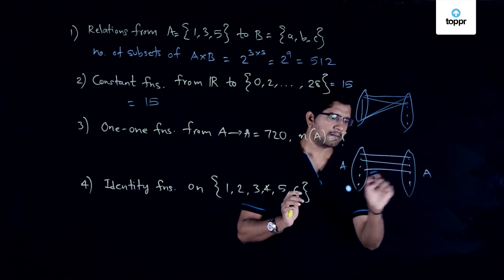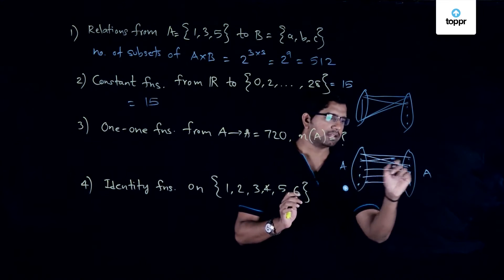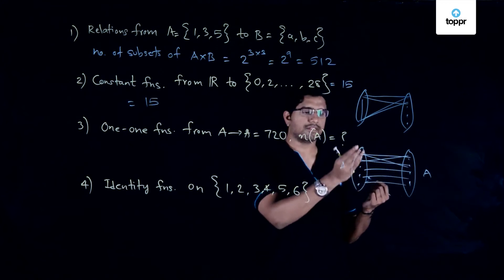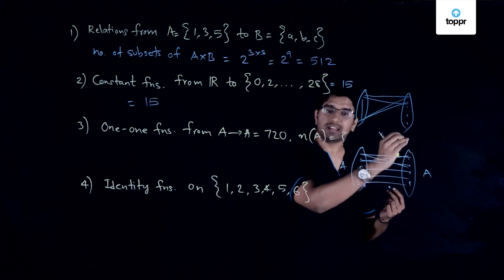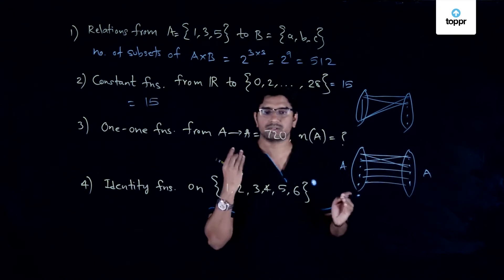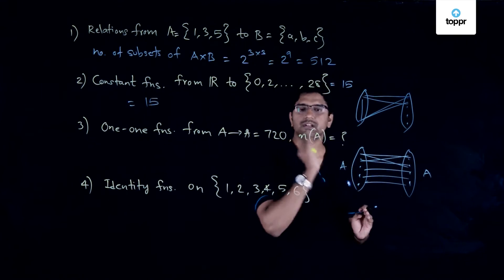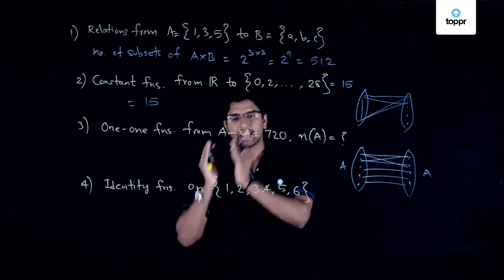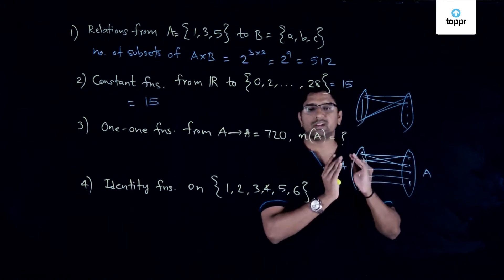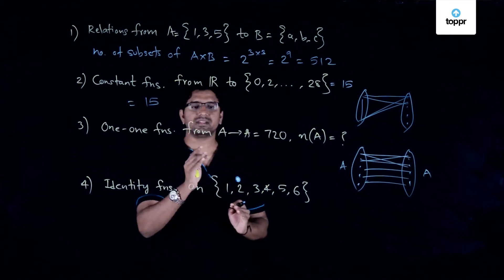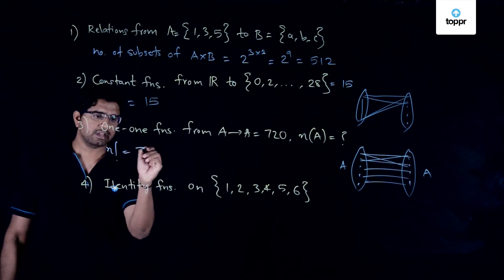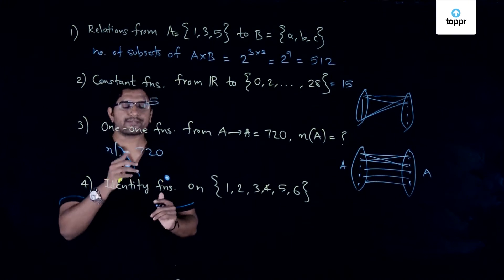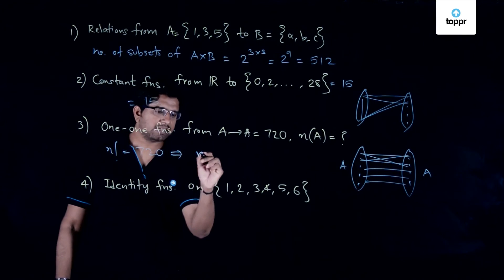The first element has n choices, the second has n minus 1 choices, the third has n minus 2, and so on, giving a total of n × (n−1) × (n−2) × ... × 1, which equals n factorial. The number of one-to-one functions from a set to itself is n factorial. Since n factorial equals 720, and 6 factorial is 720, n equals 6.